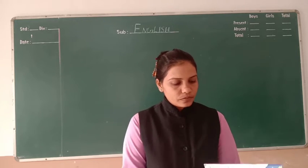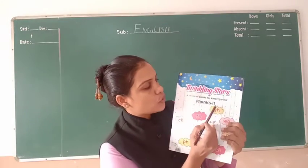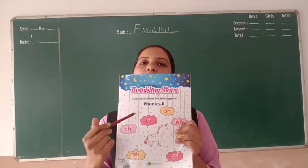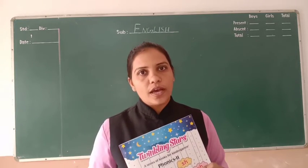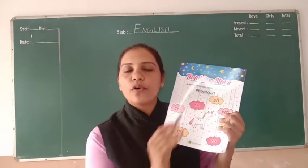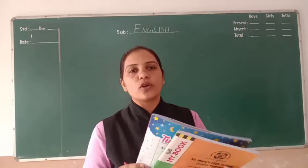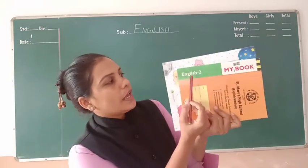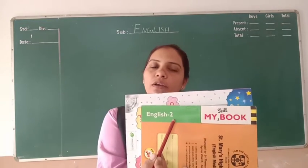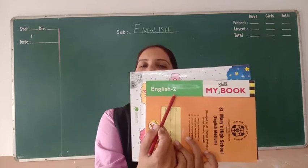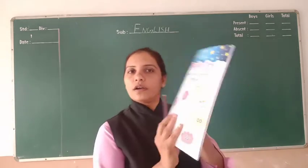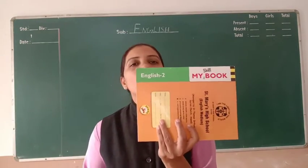Okay, I will show you that. Dekho, yeh jo hai, wo Phonics 2 hai. Phonics 2 — okay. Yeh jo textbook hai, aisa humne Phonics 1 jo textbook tha, iske pehle ka, yahan pe 2 hai. Toh jo 1 wala hai, woh humne already completed. Phonics 1, okay. Aur yahan pe notebook jo hai, wo English — English 2 likha hai, hai na. Par, humne English 1 woh complete kar diya. English 1, okay.